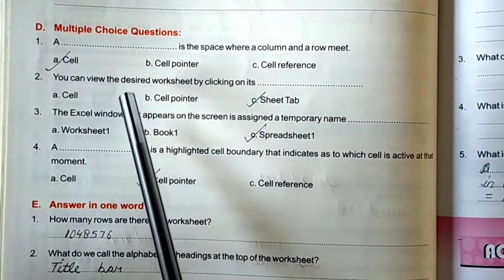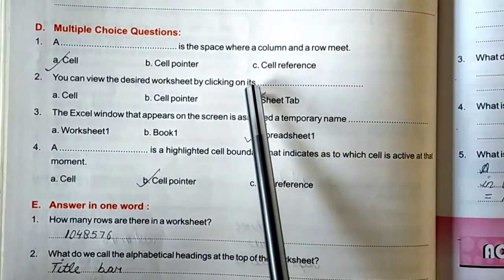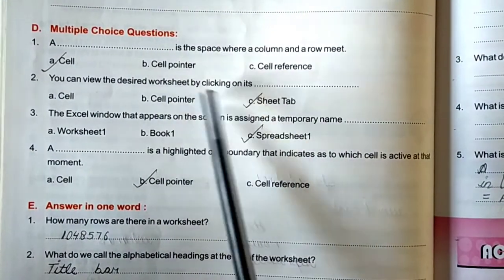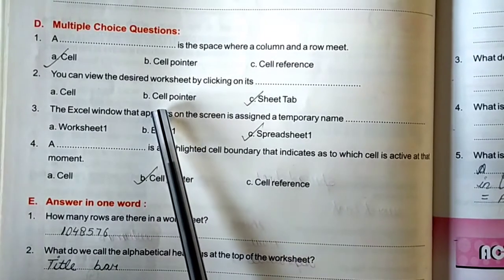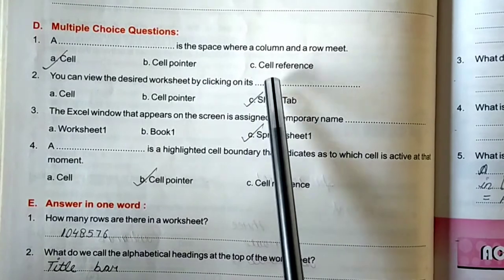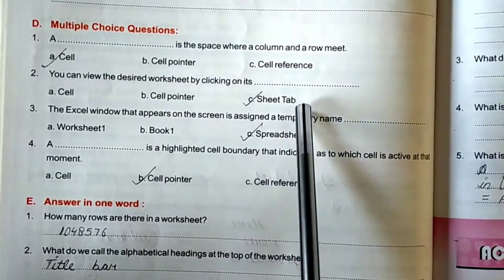Second, you can view the desired worksheet by clicking on its cell, cell pointer, or sheet tab. You can view the desired worksheet by clicking on its sheet tab.